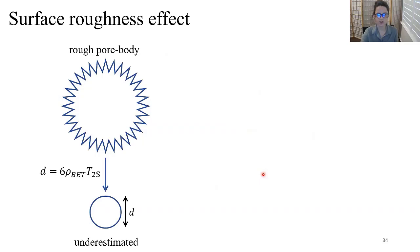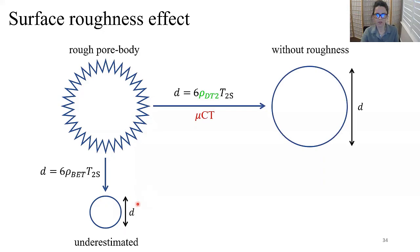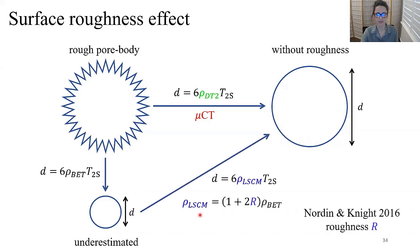This illustration shows the surface roughness effect on NMR pore size estimation. The standard BET method uses nitrogen absorption isotherms together with average T2 to calibrate surface relaxivity. However, when the pore-grain surface is rough, ignoring this roughness underestimates pore size and the effect can be significant. Pore size estimated from both DT2 and micro-CT is roughness-independent. To correct for surface roughness, ρ_BET is multiplied by a factor (1 + 2r) as shown by Lorden and Knight in their 2016 paper.